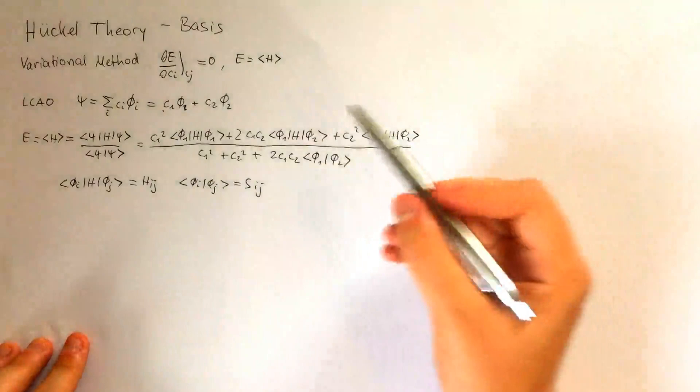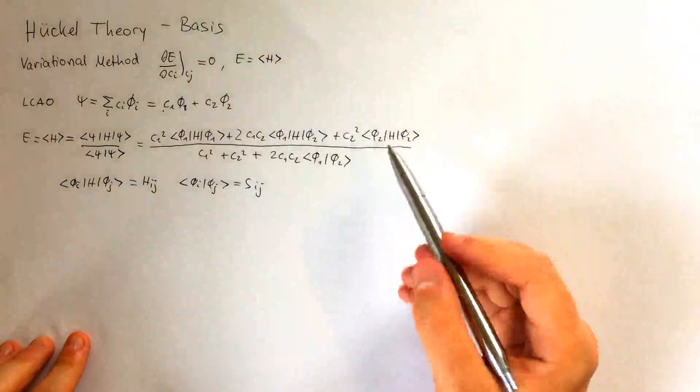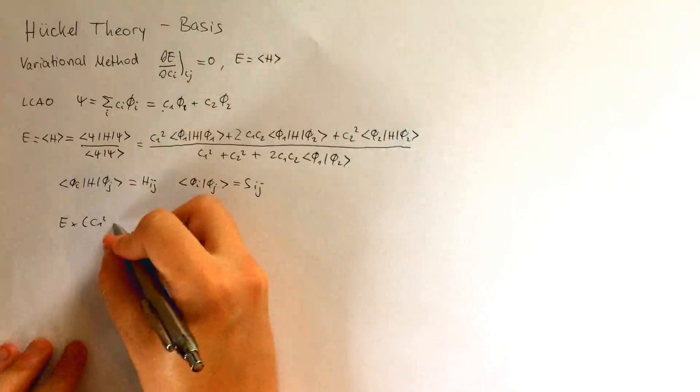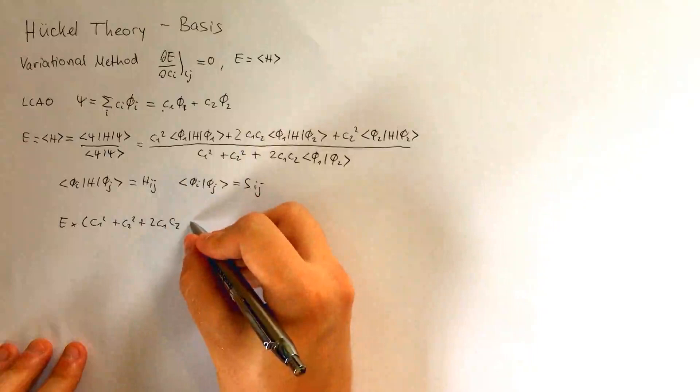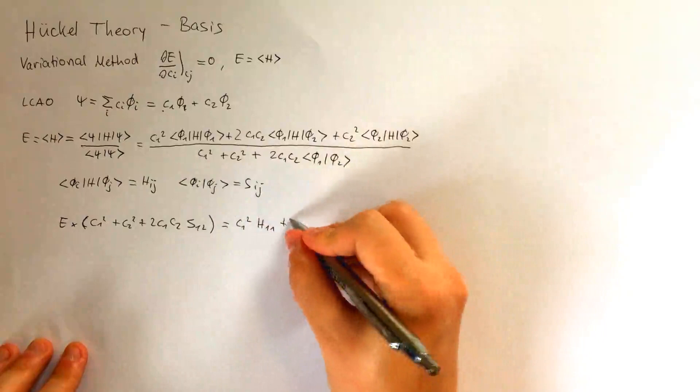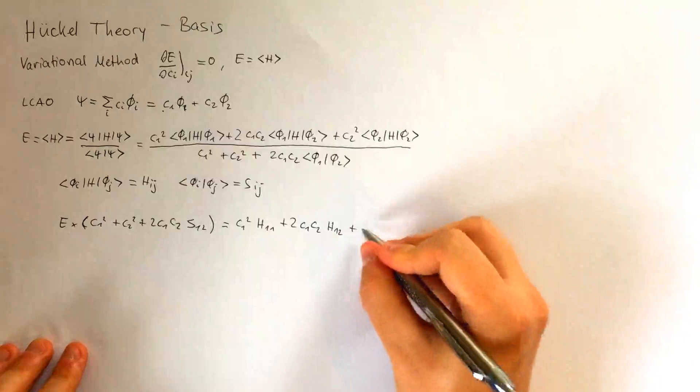Now we'll need to minimize this term by taking the derivative. In order to do that, I'll multiply both sides by the bottom term. So we have E times C1 squared plus C2 squared plus 2 C1 C2 S12 equals C1 squared H11 plus 2 C1 C2 H12 plus C2 squared H22.